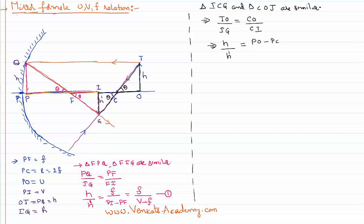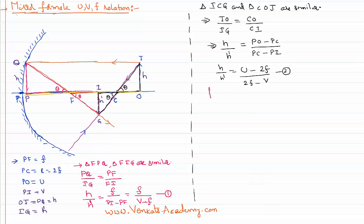PO is the distance between pole and object, and PC is the distance between pole and center of curvature. I can write CI further as PC minus PI. So h by h-dash equals (PO minus PC) by (PC minus PI). PO is the object distance represented with u, PC is the radius of curvature equal to double the focal length 2f, and PI is the image distance v. Let me call this equation number two.